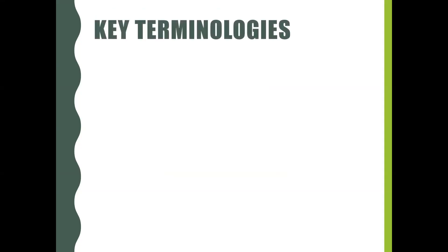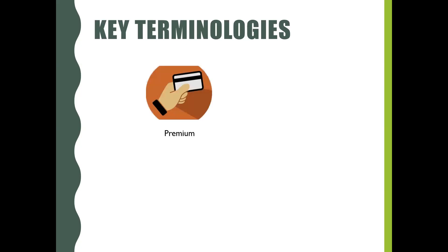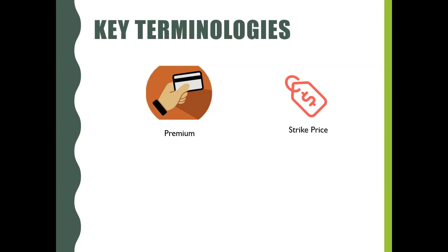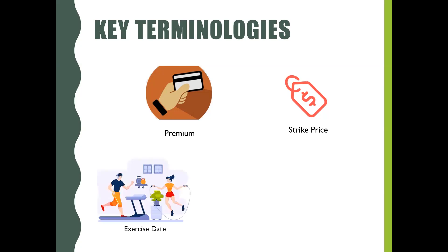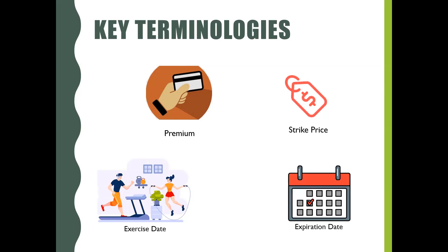Key terminologies related to Options Contract: Option premium is the price paid by the buyer of the option to acquire the right. Strike price, also known as exercise price, is the price at which the underlying may be purchased or sold. Exercise date is the date on which the option is actually exercised. Expiration date is the last date for exercising the option.